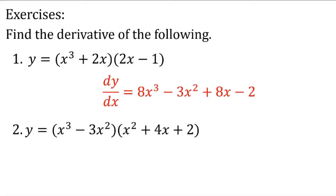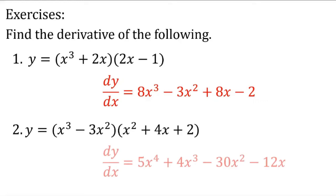Who would like to share their answer for number two? Aliana answers: dy over dx equals 5x to the 4th plus 4x cubed minus 30x squared minus 12x. Very good.